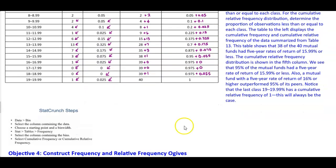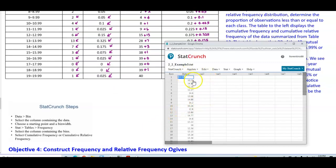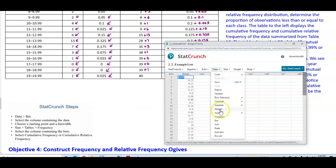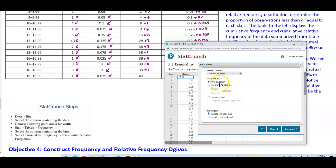Now for the StatCrunch step — how do we do this on StatCrunch? First, open up the data. Then we want to create a bin, so go to Data and select Bin. We do not want to define the bins automatically; we want to use Fixed. We're going to call this column 'bin return.' Because we started with a lower class limit of 8, we start at 8, and the bin width is the class width, which is 1.